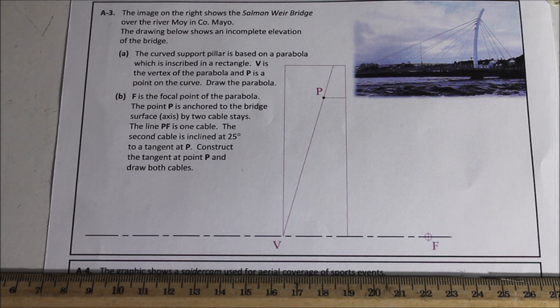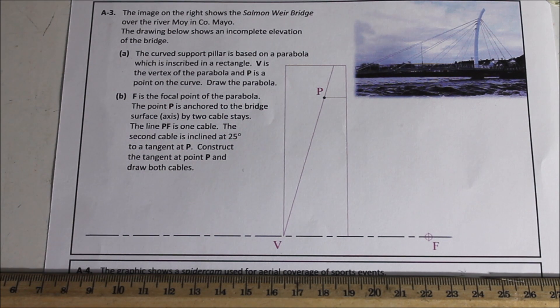In this question we are doing 2018 A3, a short question. So as always, quickly read through it and then we'll move on. The image on the right shows the Salmon Weir Bridge over the river Moy in County Mayo. The drawing below shows the incomplete elevation of the bridge.